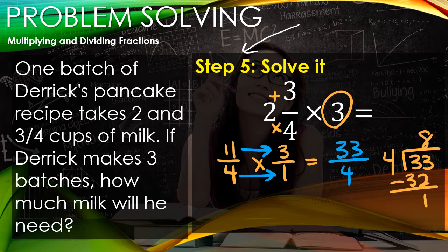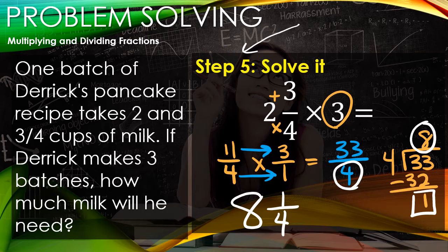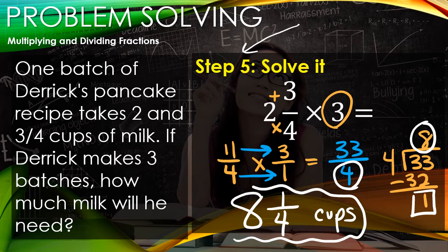So that's our whole number. We keep our denominator the same, which is 4, and the remainder of 1 becomes our numerator. So we can say that overall, the cups required for this project is 8 and 1/4 cups.